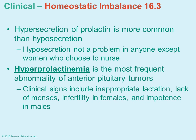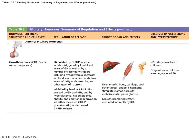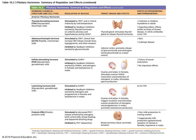Hyperprolactinemia — hypersecretion of prolactin — is much more frequent than hyposecretion, and is often triggered by tumors. Signs include inappropriate lactation, lack of menses, and possible infertility in females. A summary table lists all six anterior pituitary hormones along with what regulates, stimulates, or inhibits their release, what the target organ is, and the effects of too much or too little. The two posterior pituitary hormones stored there — oxytocin and ADH — are actually made in the hypothalamus.